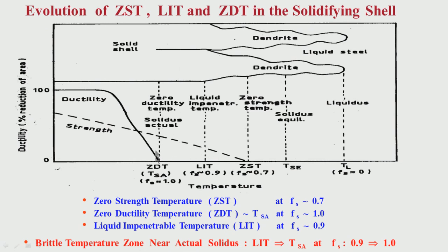When we are at the actual solidus temperature, the solid fraction is 1. You get some strength, but look at the ductility figure — the ductility of the strand. In the range when the strand has developed strength, you do not find any ductility. So it has zero ductility in this region. In the temperature range corresponding to solid fraction 0.7 to 1 — that means when the solid fraction is 70 percent to 100 percent — the strand does not have any ductility, but it has some strength.